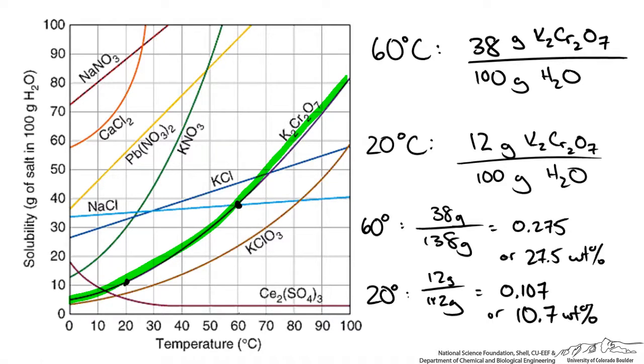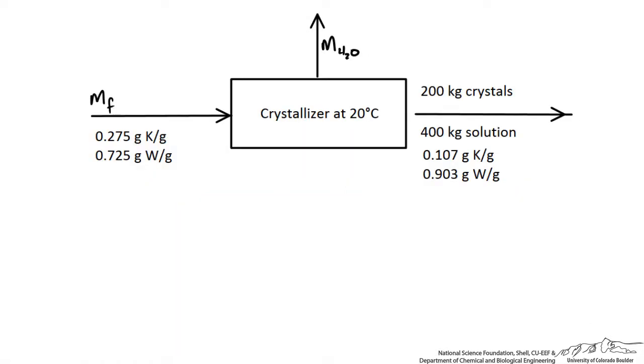So now we could use these mass fractions in our material balance schematic to fill in for the compositions of the incoming stream and outgoing saturated streams. So I have redrawn our schematic with the information that we know for our compositions of the inlet and outlet of the crystallizer. As you see, we have two unknowns.